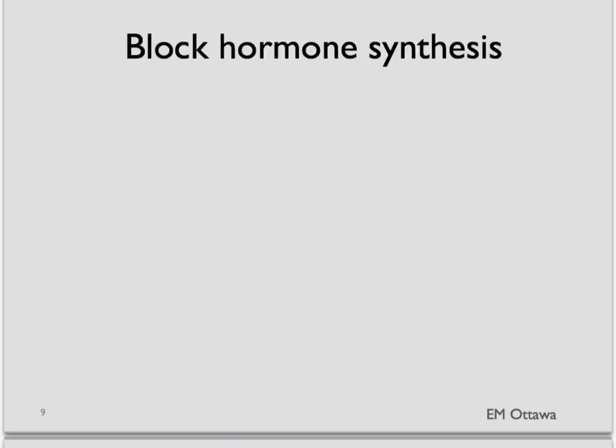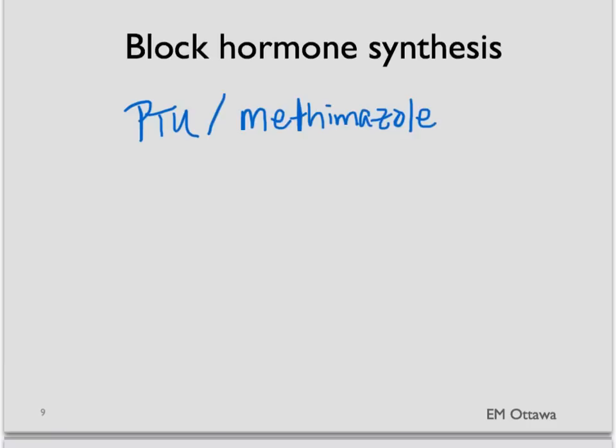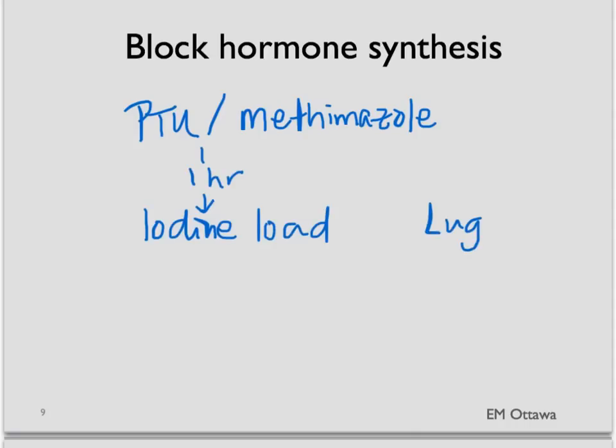We first block thyroid hormone production by the thyroid gland. We do this by giving a medication called PTU, or propylthiouracil. Another medication called methimazole can also be given. About an hour after this, we also block the release of hormone that was already made by iodine-loading the body, in the form of Lugol's solution or SSKI.